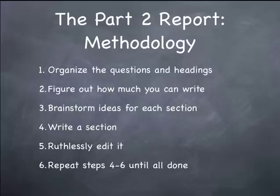The 30-second quick and dirty methodology for doing part 2's report breaks down into 6 steps. The first is organize the questions and headings. 2, figure out how much you can write. 3, brainstorm ideas for each section. 4, write a section. 5, ruthlessly edit it. And 6, repeat steps 4 to 6 until you're all done.